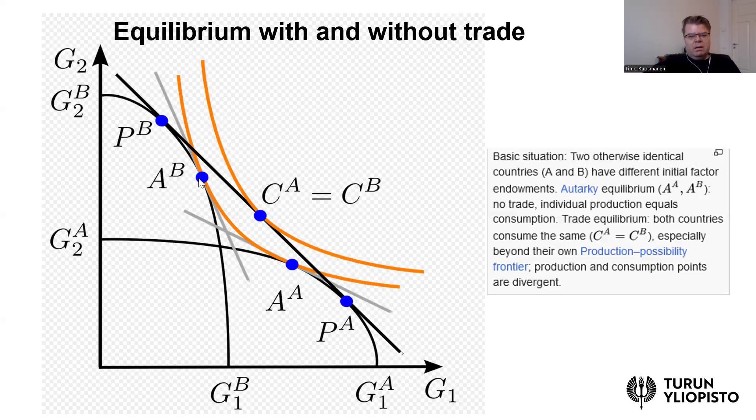Whereas country B would move from AB to PB. So it would specialize more to the labor intensive good and then export. When we take into account these possibilities that it can export this surplus of the good that it doesn't produce, then both countries can move their consumption to CA. So this is the intuition of the Heckscher-Ohlin model.